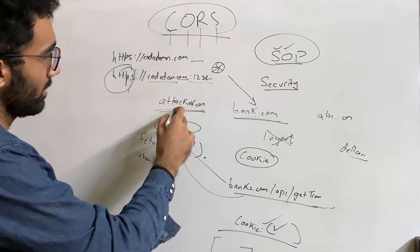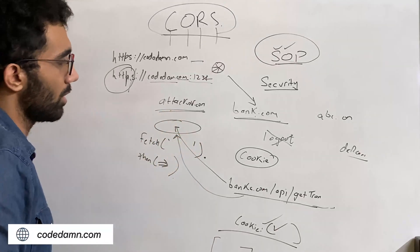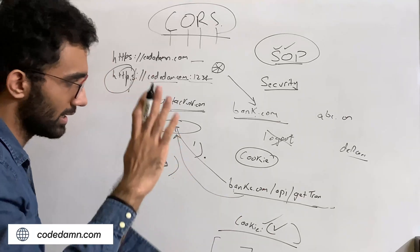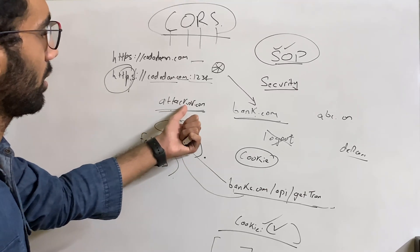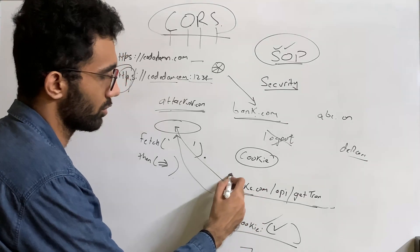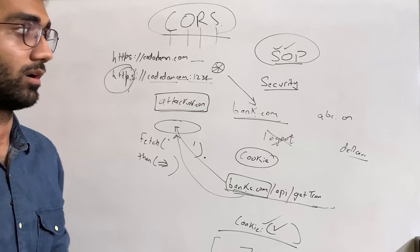What this means is that when attacker.com, in the real scenario, what's happening is when attacker.com is trying to make this request, what browser would say is: hold on, this seems a bit different because attacker.com is not in the same origin of bank.com. This is a different origin.